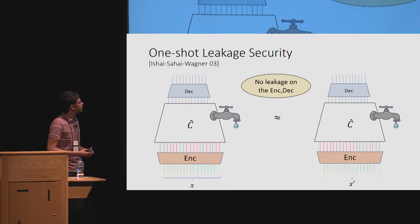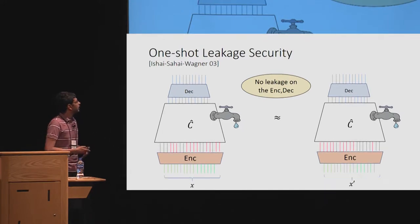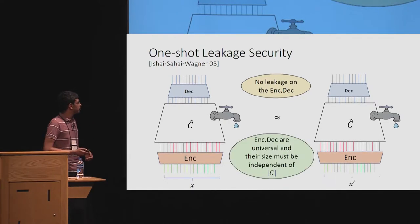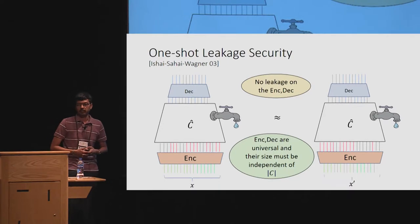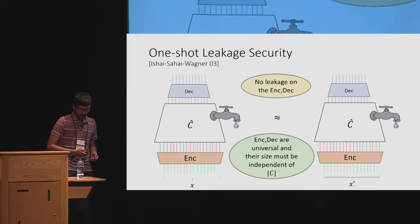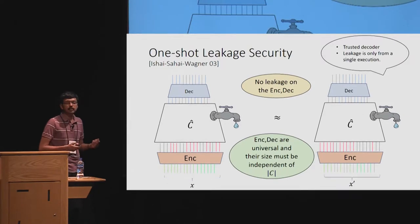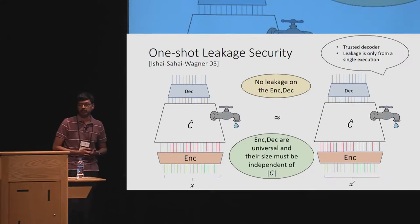However, this security notion additionally assumes that the decoder is also leak-free, which is a somewhat strong assumption. Given that the encoder and decoder are leak-free, to disallow trivial solutions, we need both to be universal, and their sizes must be independent of the size of the circuit. There are two drawbacks: first, it assumes the existence of a trusted decoder; and second, leakage only happens from a single execution of the circuit C-hat.